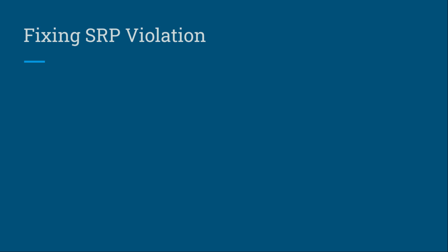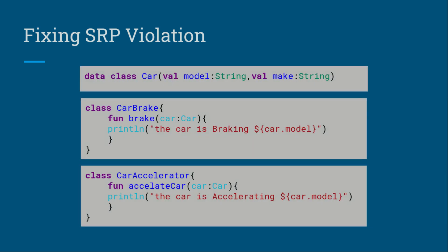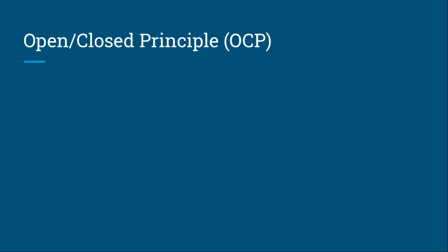So how can we fix this SRP violation? We can introduce a data class that holds information about a particular car. Then we can perform different functions by using different classes. For example, here we have created a class for car braking and also a class for accelerating — each doing one thing and doing it well. If we want to add another functionality, we can easily add another class for that specific responsibility.